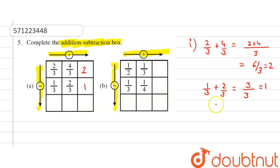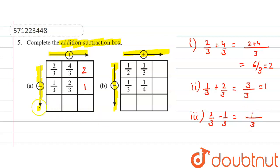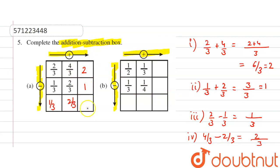Now subtract 4/3 minus 2/3: taking 3 as LCM, 4 minus 2 is 2, so it becomes 2/3. Now subtract 2 minus 1, which equals 1.